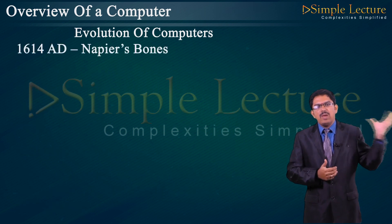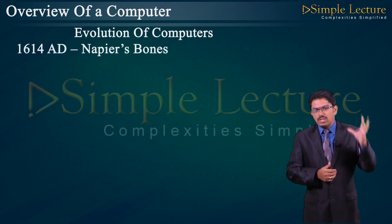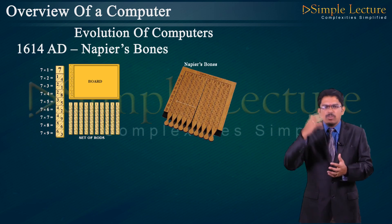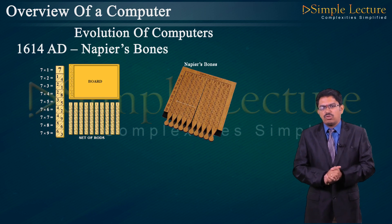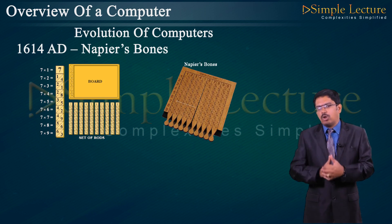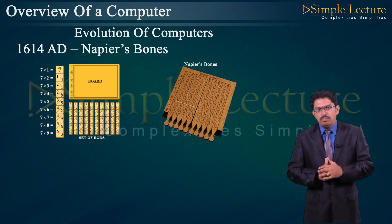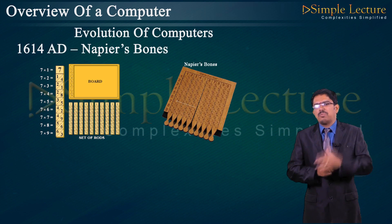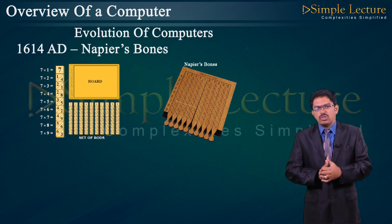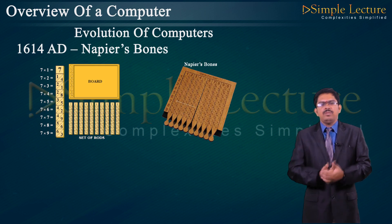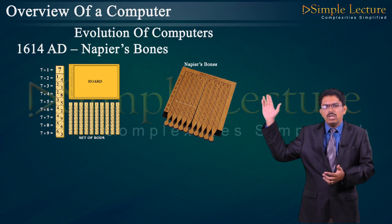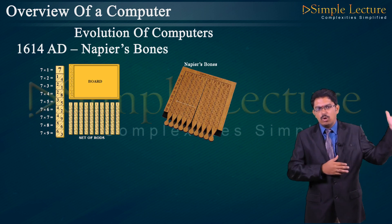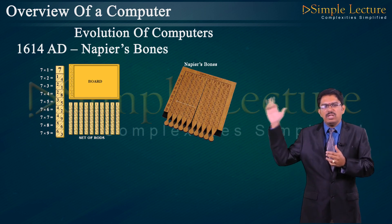The second historical device is Napier Bones, introduced in 1614 AD. This concept was introduced to implement multiplication operations. It consists of rows and columns, with numbers from 1 to 9 horizontally and vertically, with 0 kept separate. The concept is to multiply each number — for example, 1 horizontal × 1 vertical = 1, and 1 horizontal × 8 = 8.